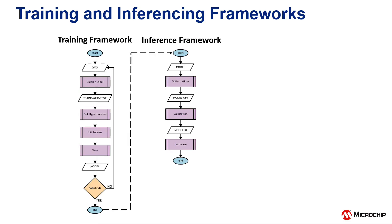As a review, AIML consists of a training framework and an inferencing framework. There are many training frameworks such as TensorFlow, PyTorch, Darknet, and many more. Neural network models are trained in these frameworks in an iterative process until the results are acceptable.